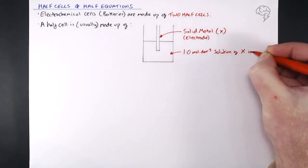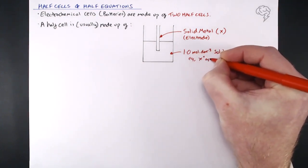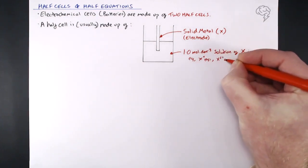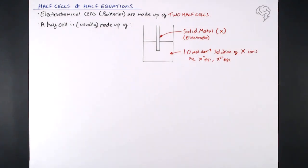Depending on the metal, it really depends on what ion you've got in there. So it could be X⁺ — so maybe Li⁺ or something like that — or it could be X²⁺ like copper two plus. So we've got a solid metal X and a one mole per decimetre cube solution of those X ions. That is nine times out of ten what you'd get in a half cell.